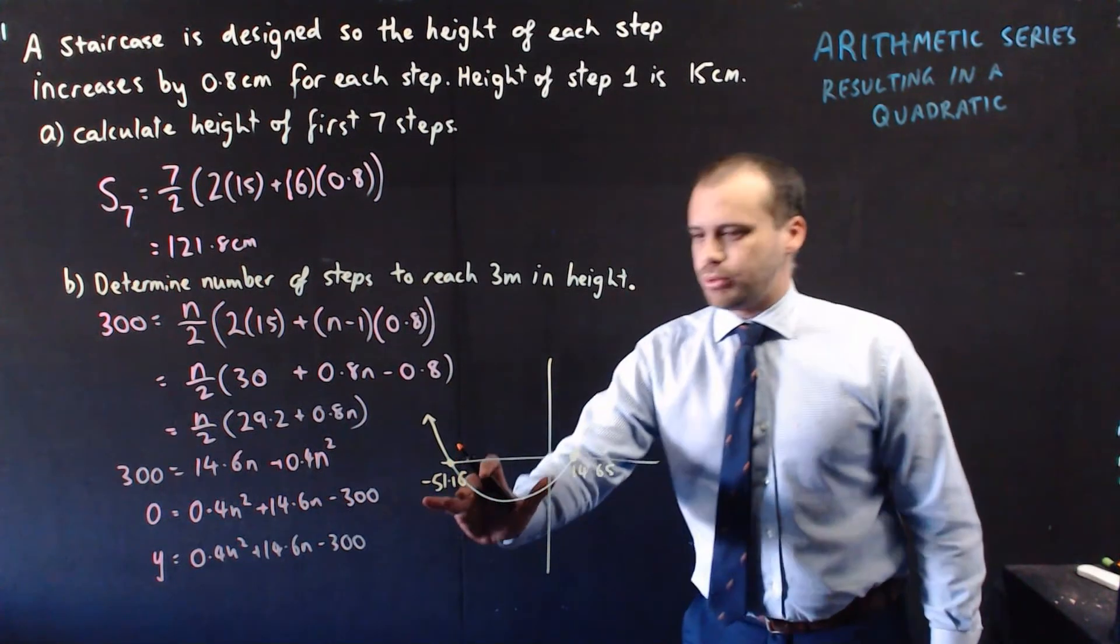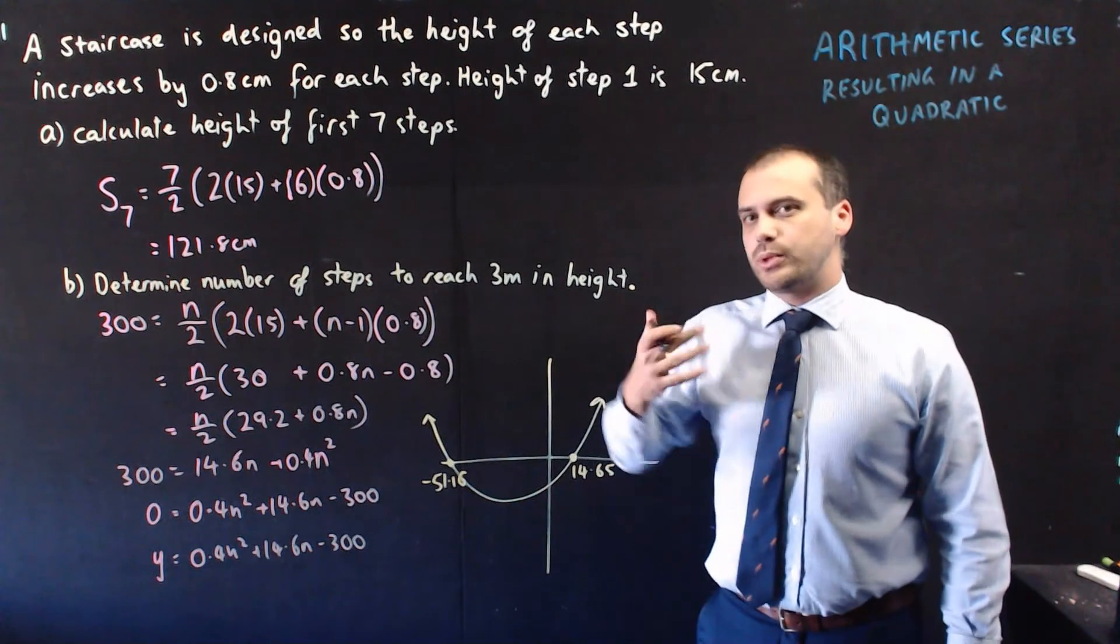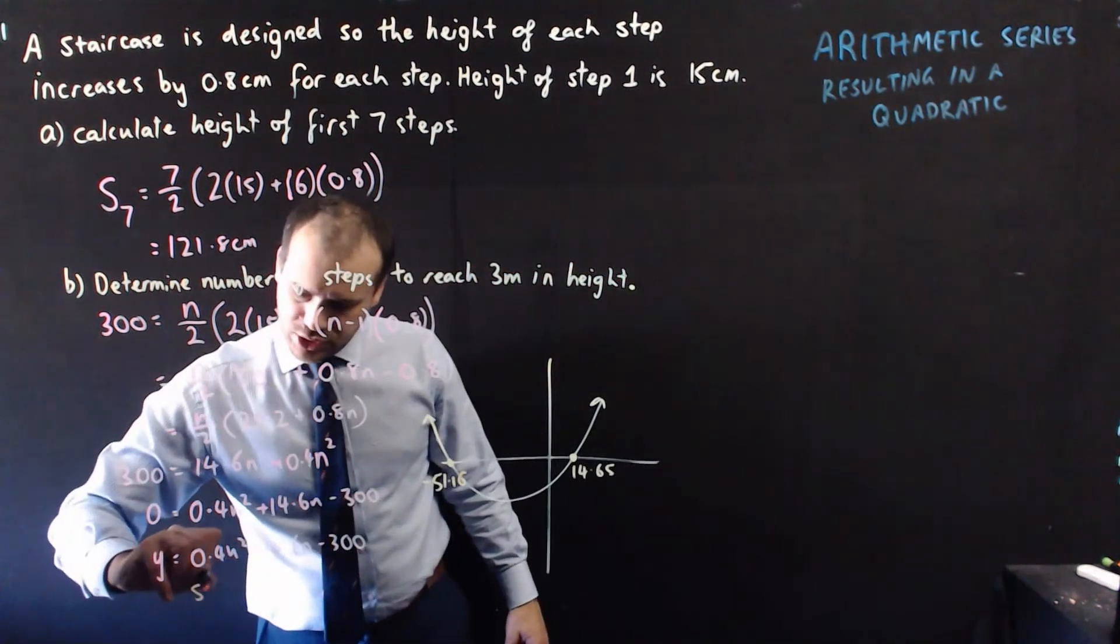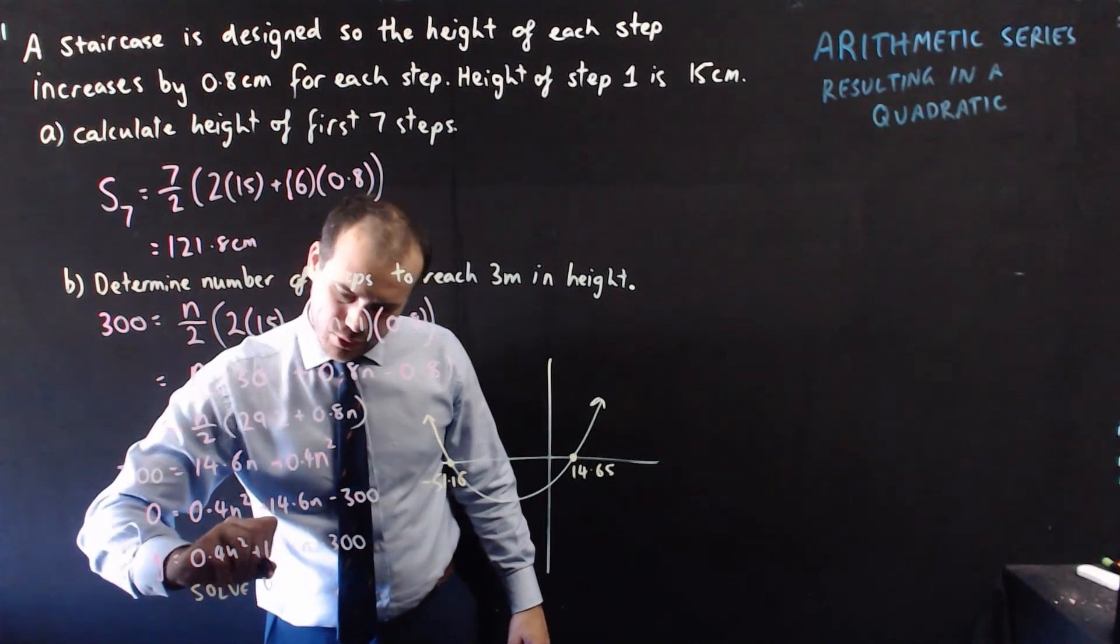Now, when I sketch it on my graphics calculator, I get two answers, negative 51.16 and 14.65. Remember, we're looking for the number of steps. So, we can say, solve, using,